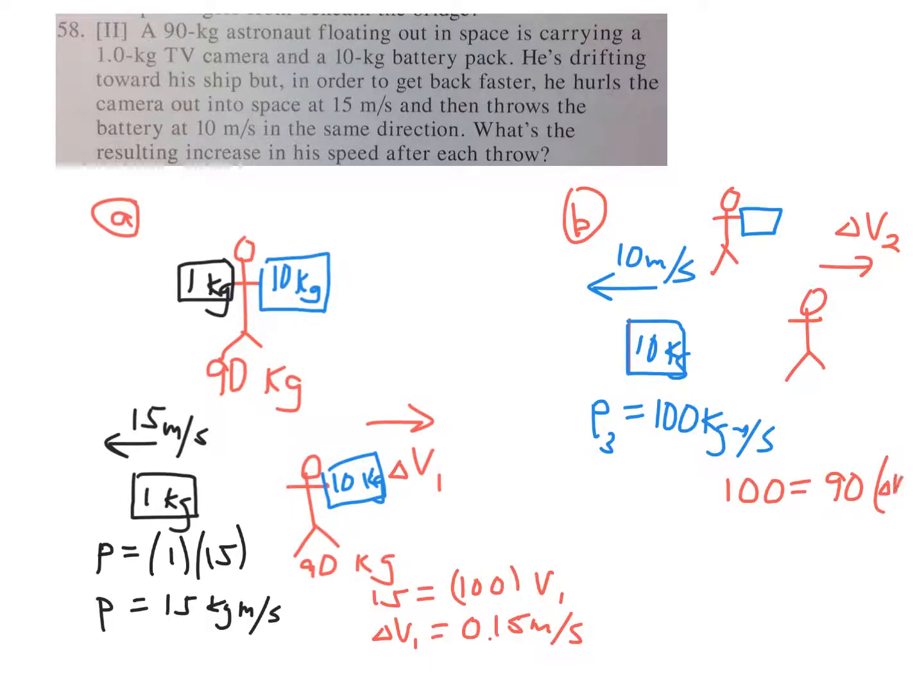I don't have to call it Delta V2, just V2 with respect to a zero reference frame. So Delta V2 is 100 divided by 90, which is 1.1 meters per second.